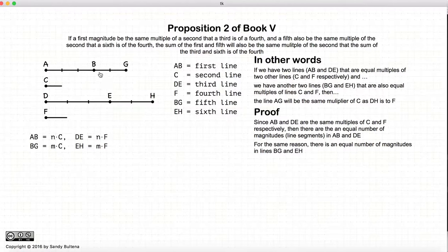Similarly, the number of Cs that we can fit into BG will be the same number of Fs that we can fit into EH. Again, it's the definition of equal multiple.